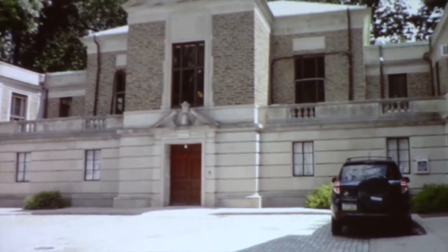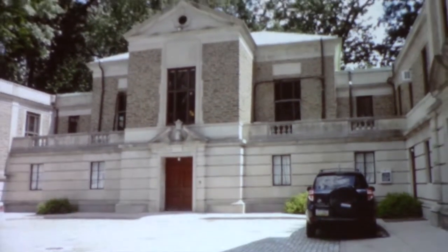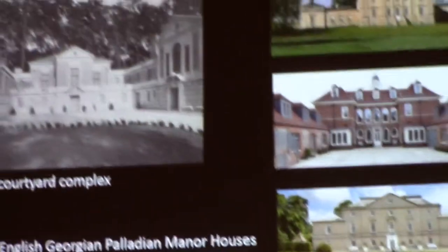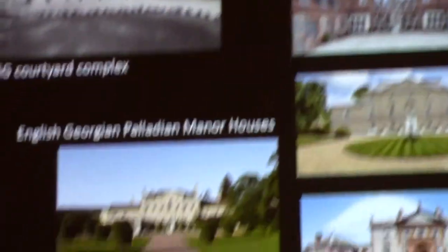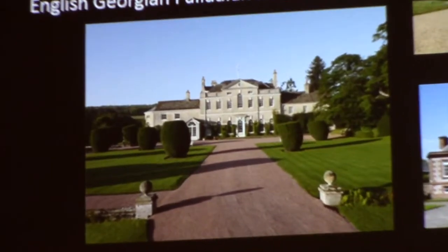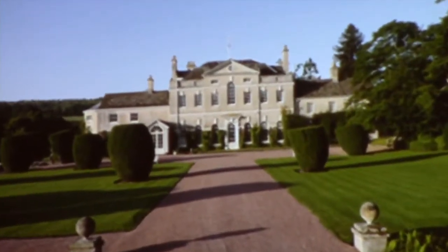Here's the courtyard. Coming to the courtyard, there's nothing that obviously says 'church' from this point of view. I did some searching of English Georgian Palladian manor houses from the 17th and 18th centuries, and you can see it looks like that — it looks like a grand manor house as you pull into the courtyard itself.